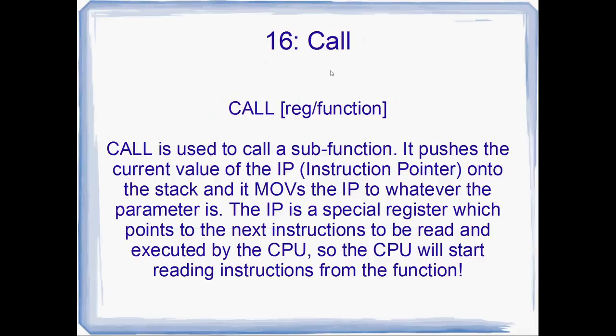Number 16: the CALL instruction. This is really, really important. CALL is used to call a sub-function. It actually pushes the current value of the IP — the instruction pointer, also called the program counter on other architectures — onto the stack, and it moves the IP to whatever the parameter is. This could be a function name, a label, or even a register. The IP is a special register which points to the next instruction to be read and executed by the CPU, so when we change the IP, the CPU starts reading and executing instructions from the function.